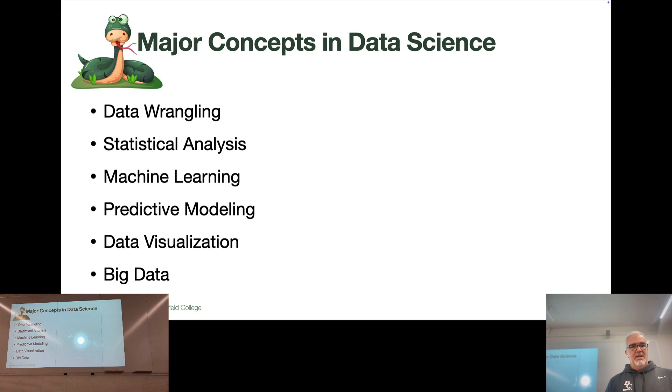So data science has some major concepts that are present there. Number one is called data wrangling. And if it sounds like I'm roping broncos when I say wrangling, that is pretty much what we're talking about.